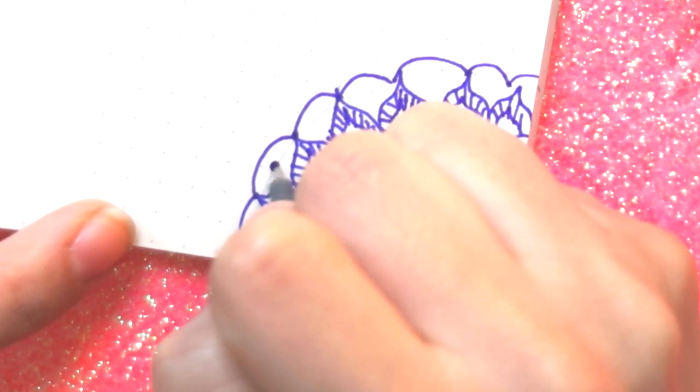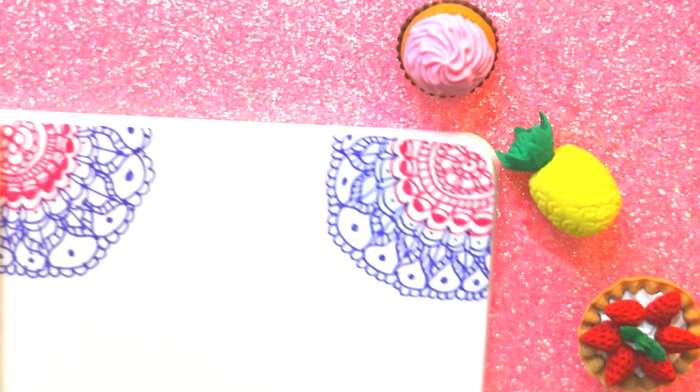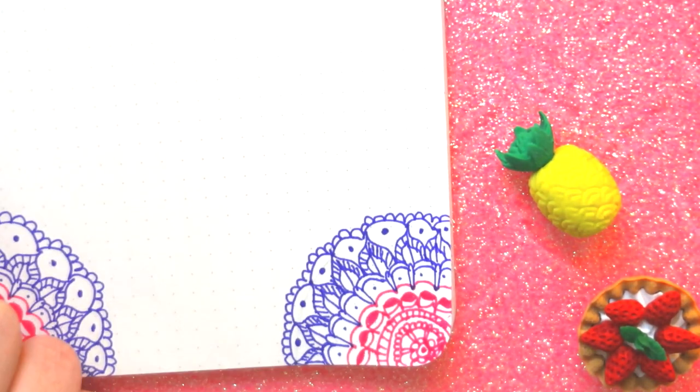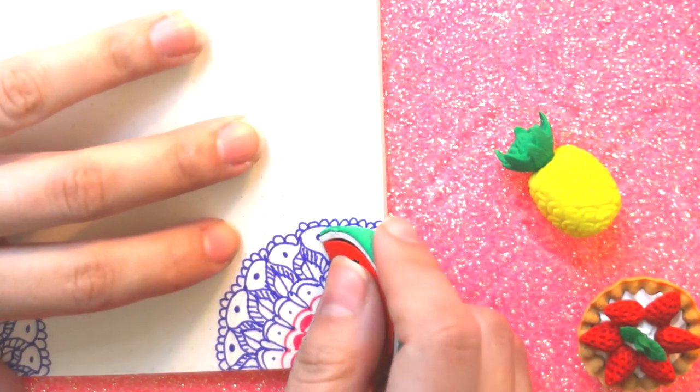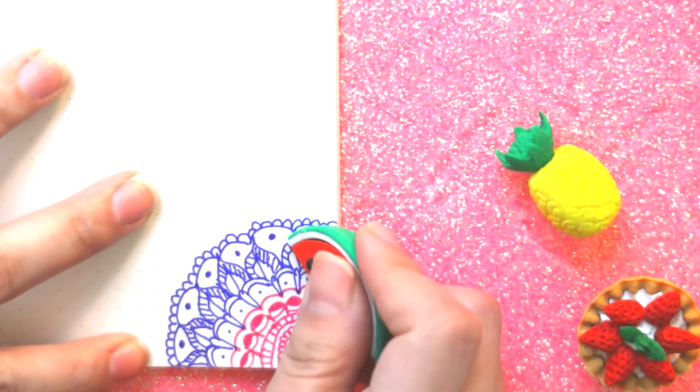And basically that's how mandalas are made, guys. It's not very difficult, but it does take time. Now, you see here how I already made four little mandalas in each corner. Now I'm going to erase that little line that I made. Remember not to skip this step.